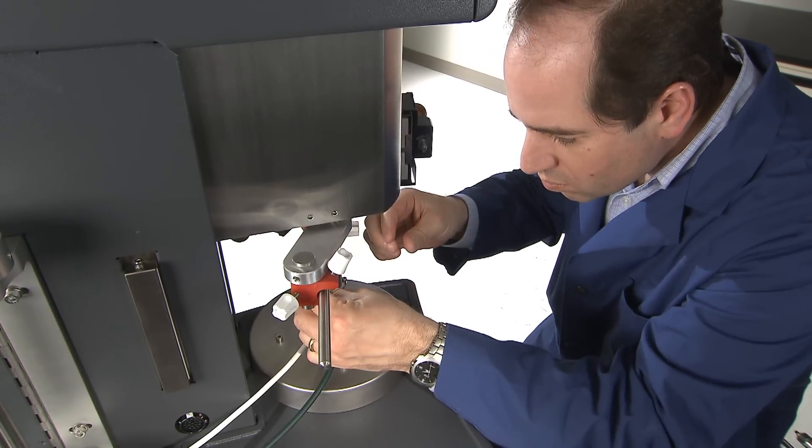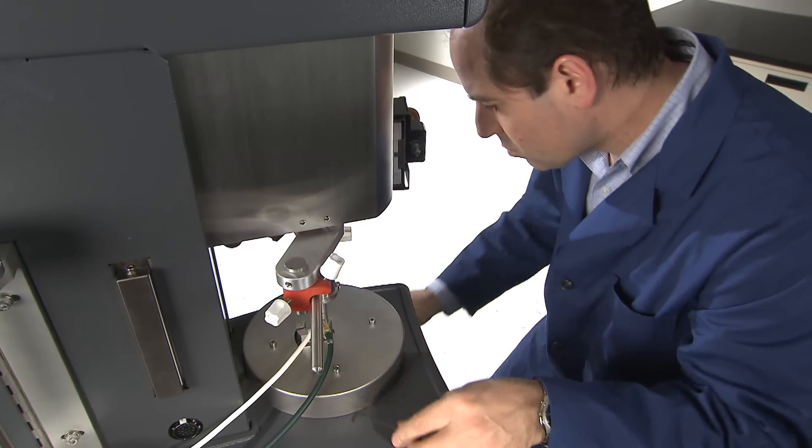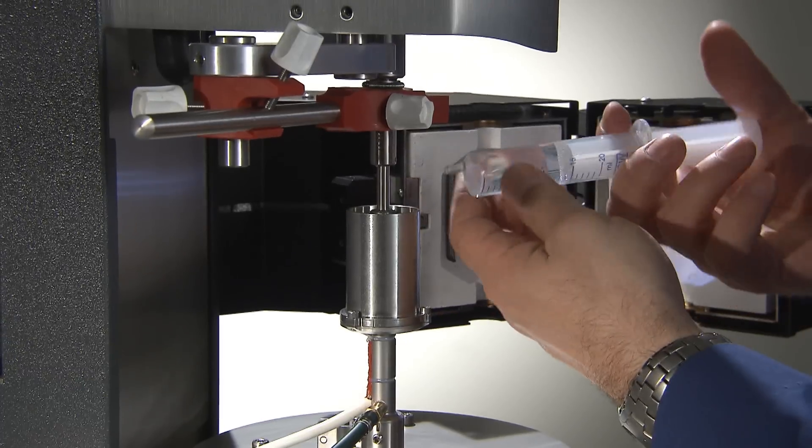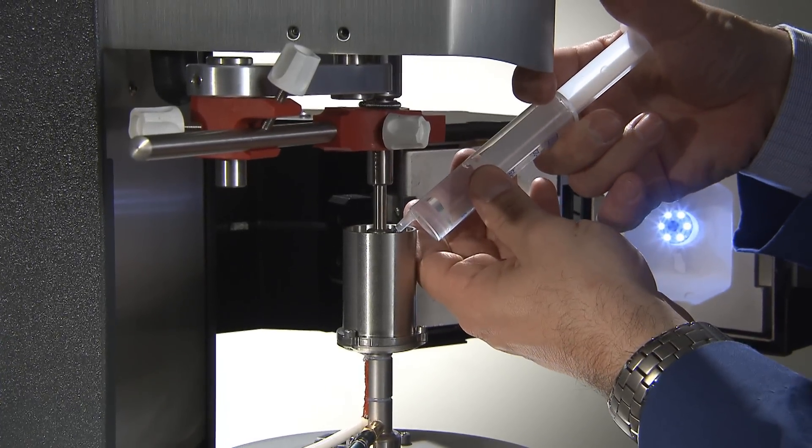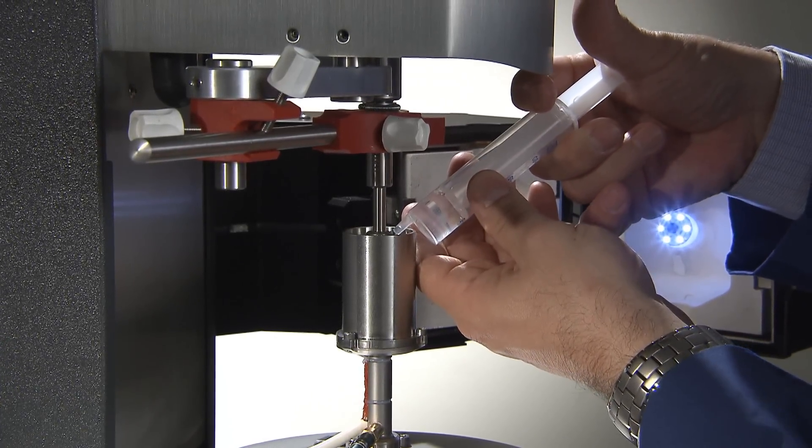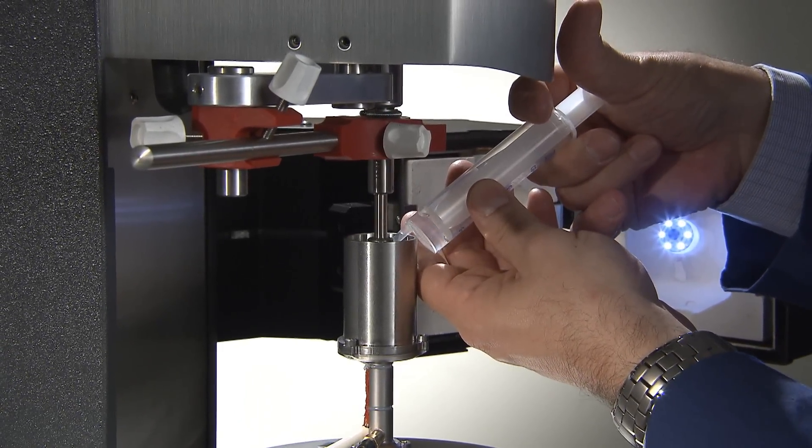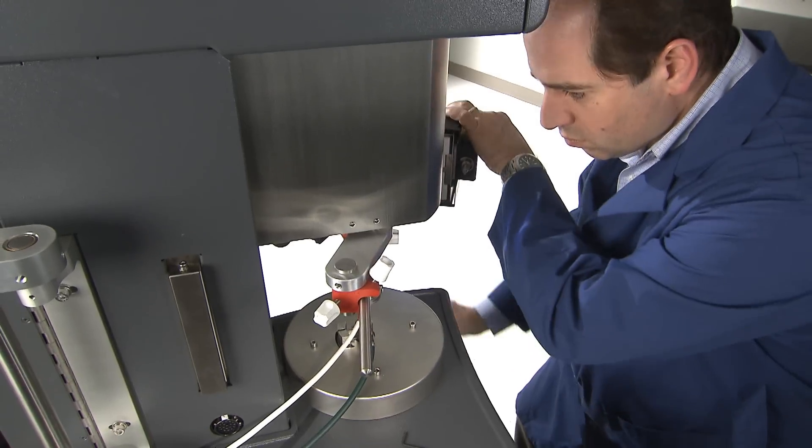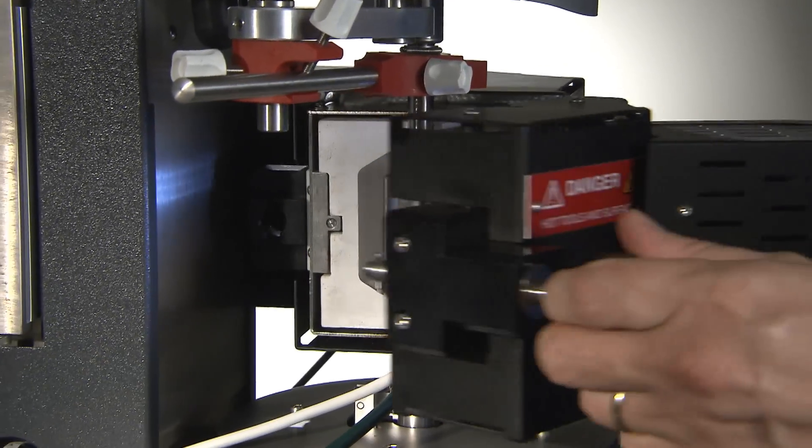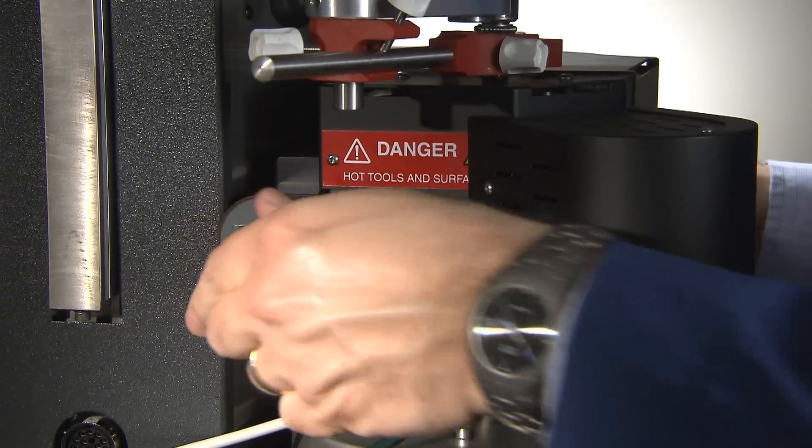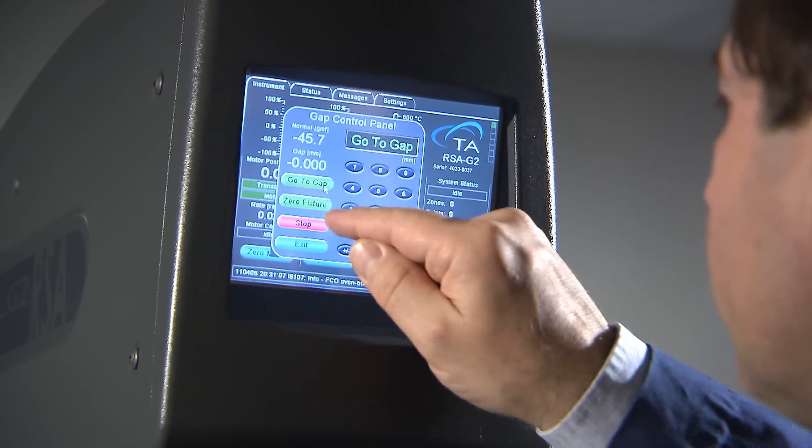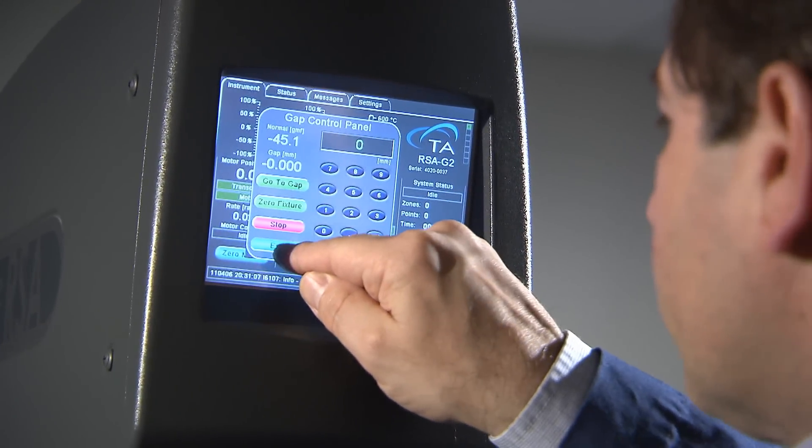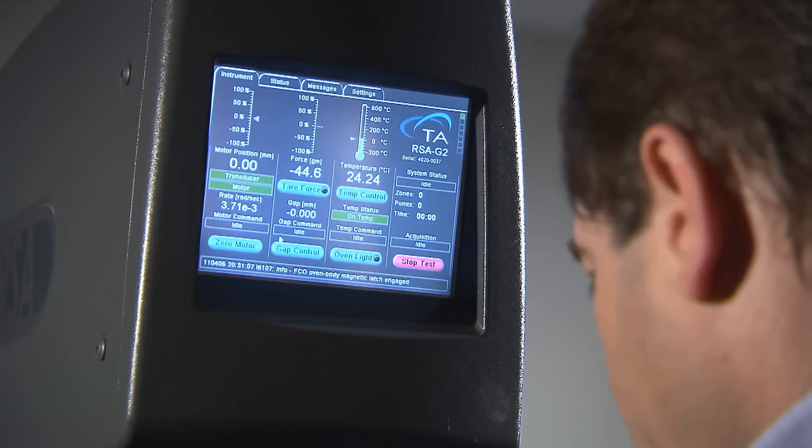The RSA-G2 offers a new level of convenience in immersion testing. The fixture takes advantage of the standard FCO over a range of minus 10 to 200 degrees Celsius and has a convenient removable container and fill and drain port, so there is no need for separate environmental controls or inverting instrument components. The system also includes tension, compression, and three-point bending clamps.